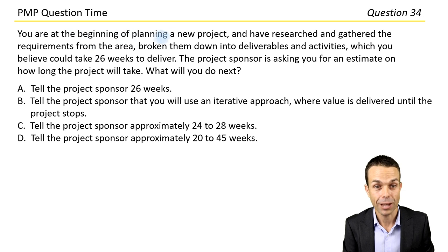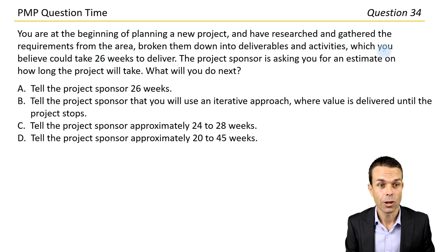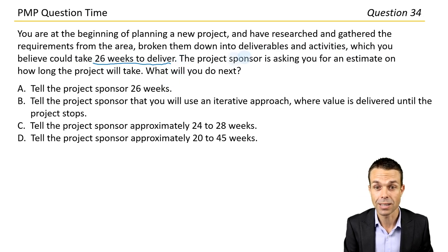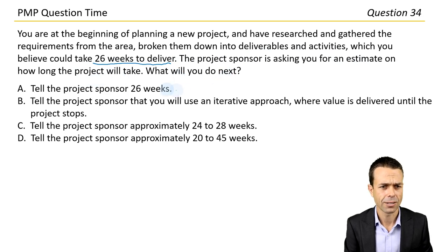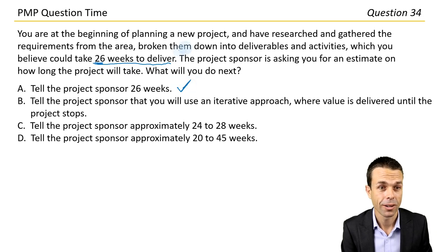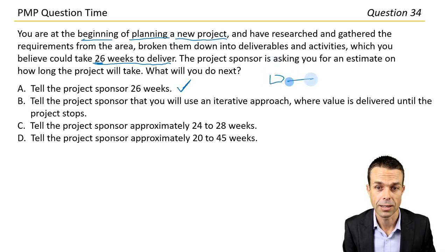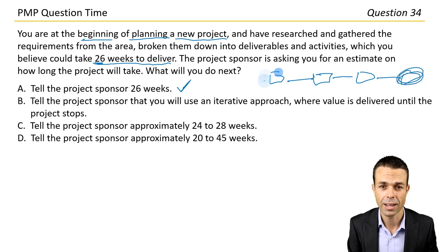You're at the beginning of planning a new project and have researched and gathered the requirements from the area, broken them down into deliverables and activities, which you believe could take 26 weeks to deliver. The project sponsor is asking you for an estimate on how long the project will take. Option A says tell the project sponsor 26 weeks. We're right at the very beginning here — not even in the project at all, just at the planning stage. That's tricky.